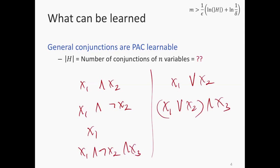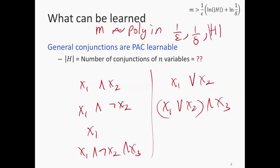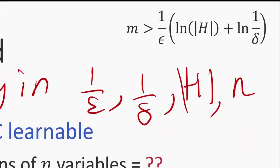The question here is to check whether conjunctions are PAC learnable or not. For PAC learnability, just to remind you, the number of examples needed must be polynomial in 1 over epsilon, 1 over delta, the size of h, and the dimensionality. Now, this expression is already polynomial in 1 over epsilon and polynomial in 1 over delta, and polynomial in the size of the hypothesis space. The only thing missing is the dimensionality.